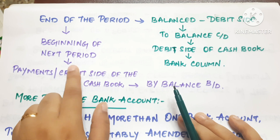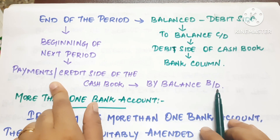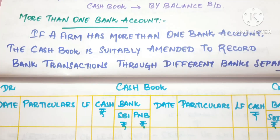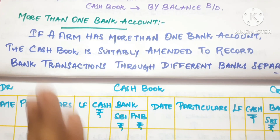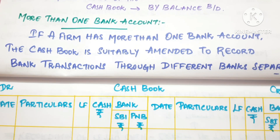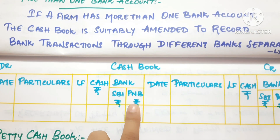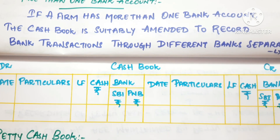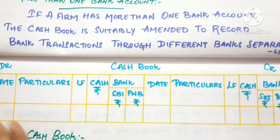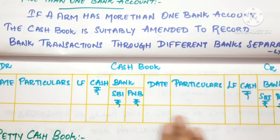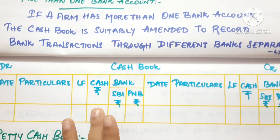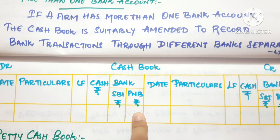We will start with payments by balance b/d. If a firm or company has more than one bank account, and there are two banks, we will create two columns. If there are more than two, we will create four columns. We start with the date and particulars - if there are many accounts in a bank, we will start with the columns accordingly.